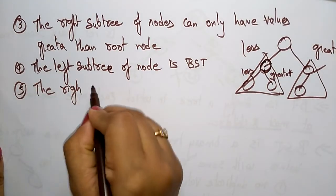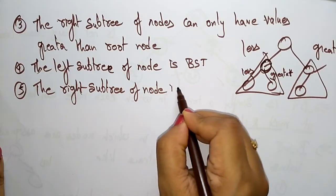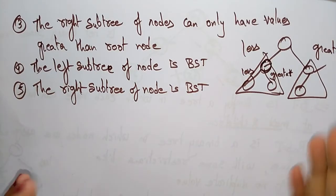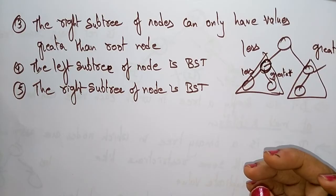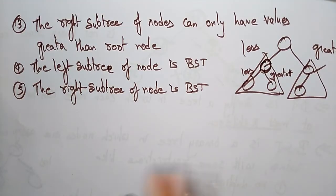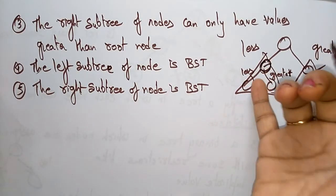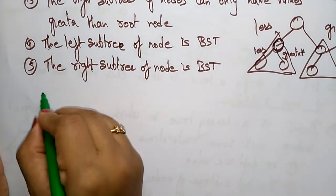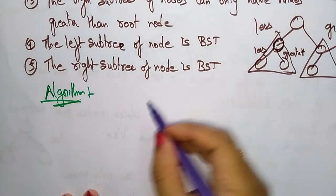The right subtree of a node is also a binary search tree. These are the restrictions you have to follow while assigning values to nodes: no duplicate values are allowed, the left subtree should be less than the root node, the right subtree is greater than the root node, and both the left subtree and right subtree of each node must themselves be binary search trees.